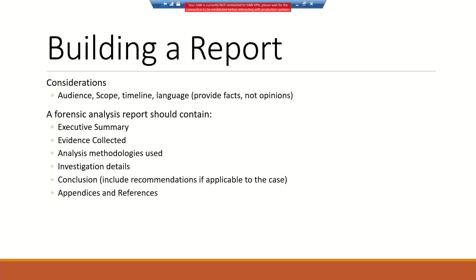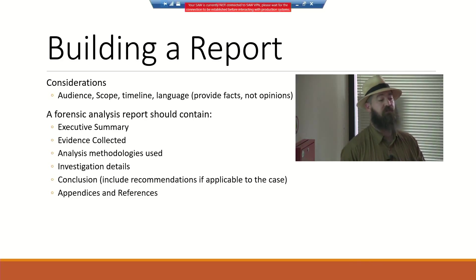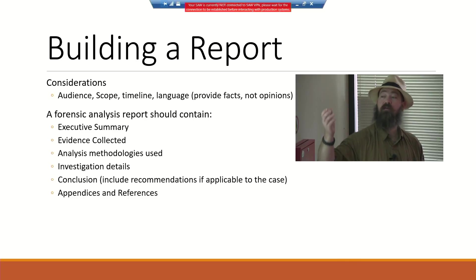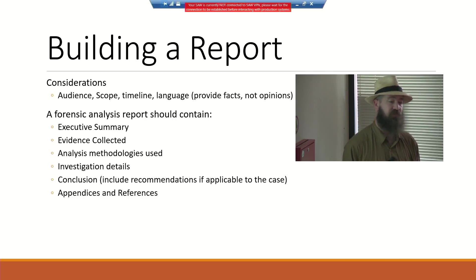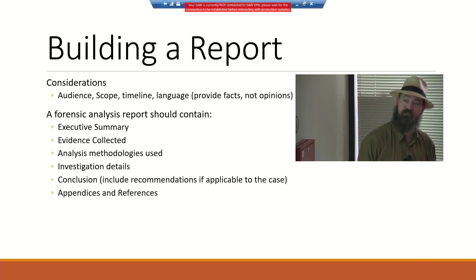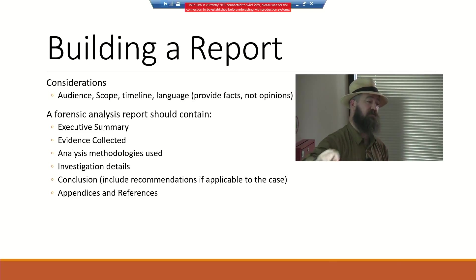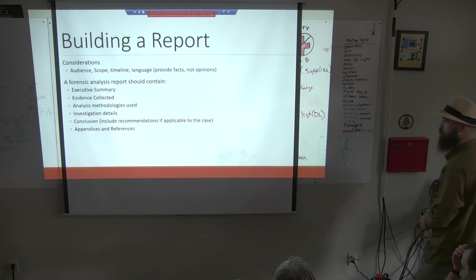Building a report: considerations include audience and scope. Is this just going to your team as lessons learned? Going to your manager? Then you need a correct executive summary, findings, and supporting detail. Is this going to legal? Make sure it's just facts, not opinions. That goes back to your timelines and logs. The report should contain events, executive summary, evidence collected, analysis, and methodologies. If you used memory forensics tools, your methodologies may include the tools used and the known artifacts they create. Especially if going to law enforcement, you'll need to include that.